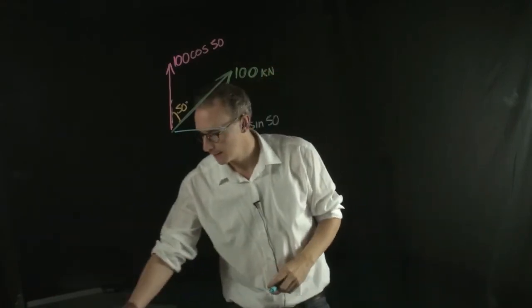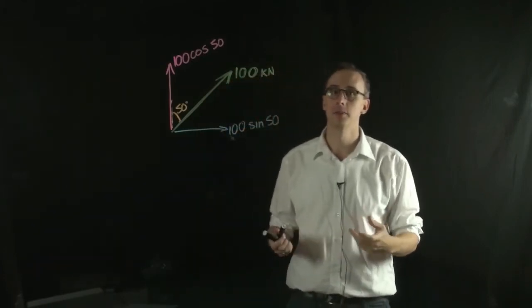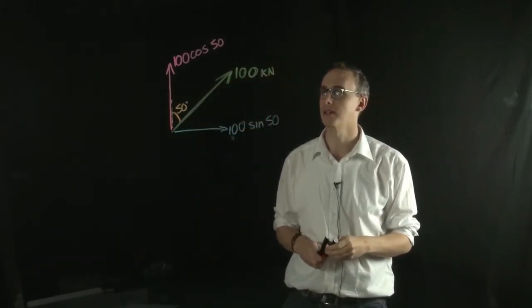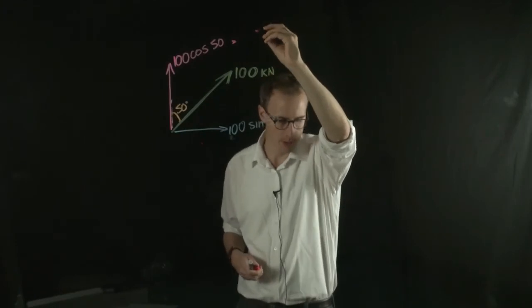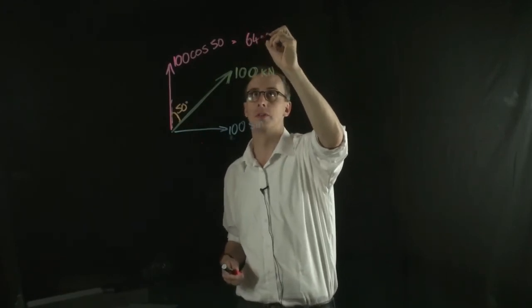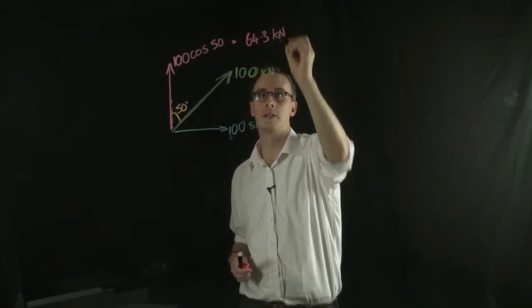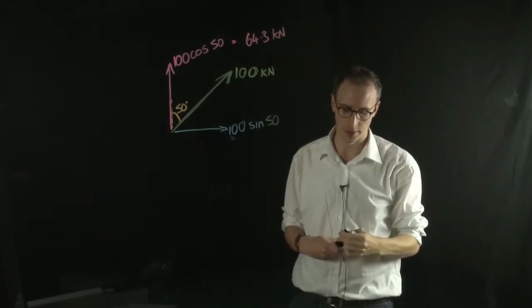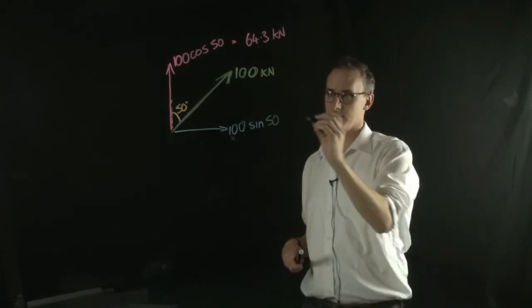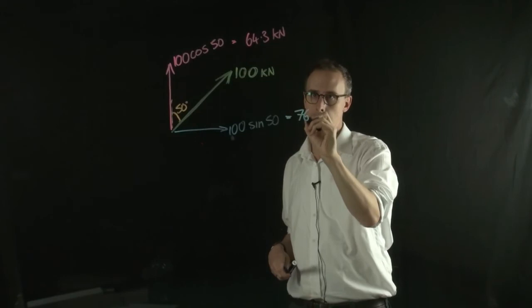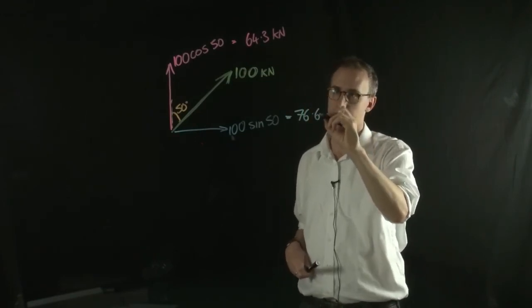And if we put those numbers into our calculators, what we get out is the vertical component is equal to 64.3 kilonewton. And the horizontal component is equal to 76.6 kilonewton.